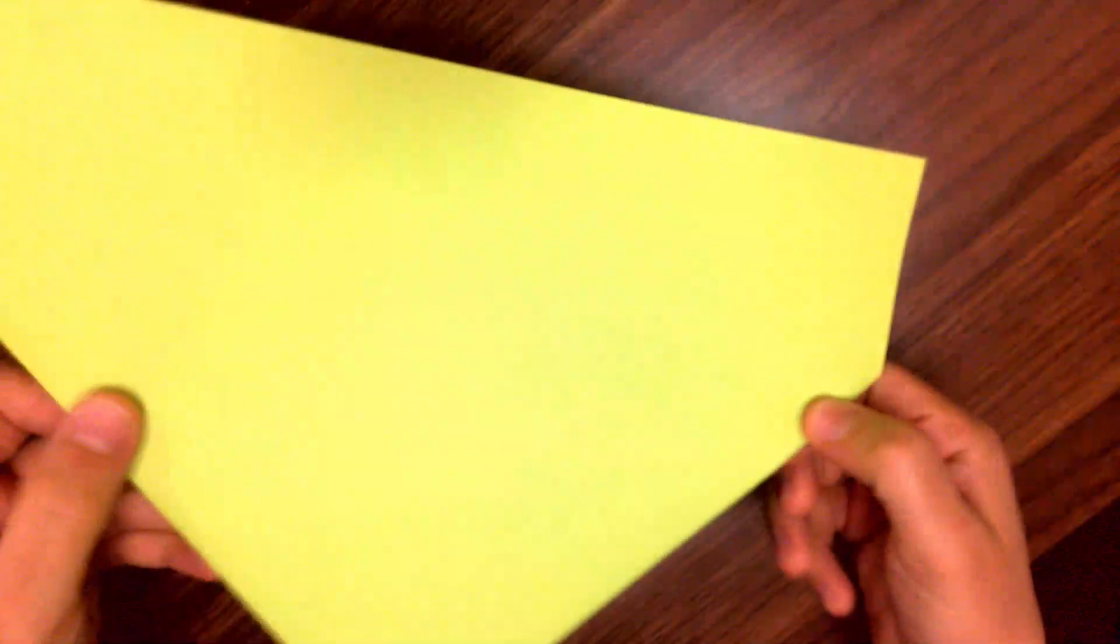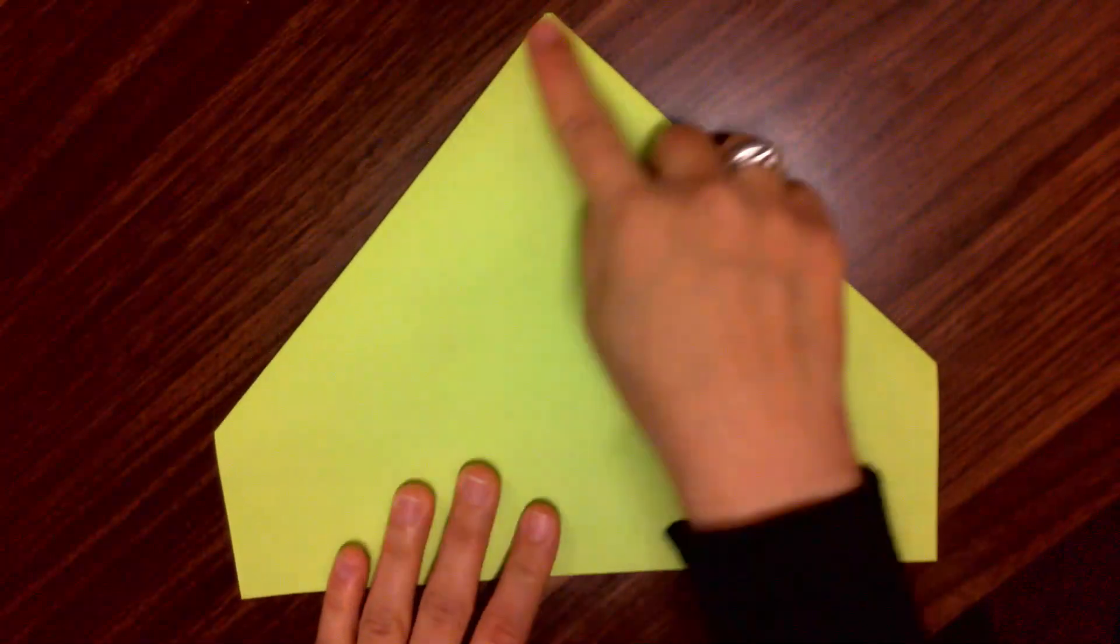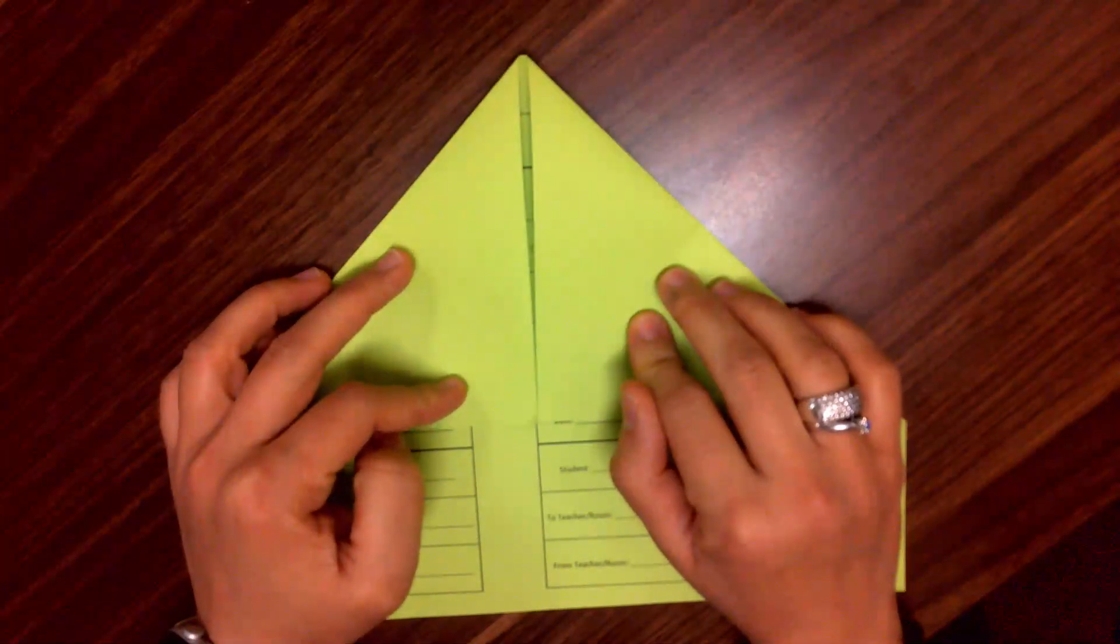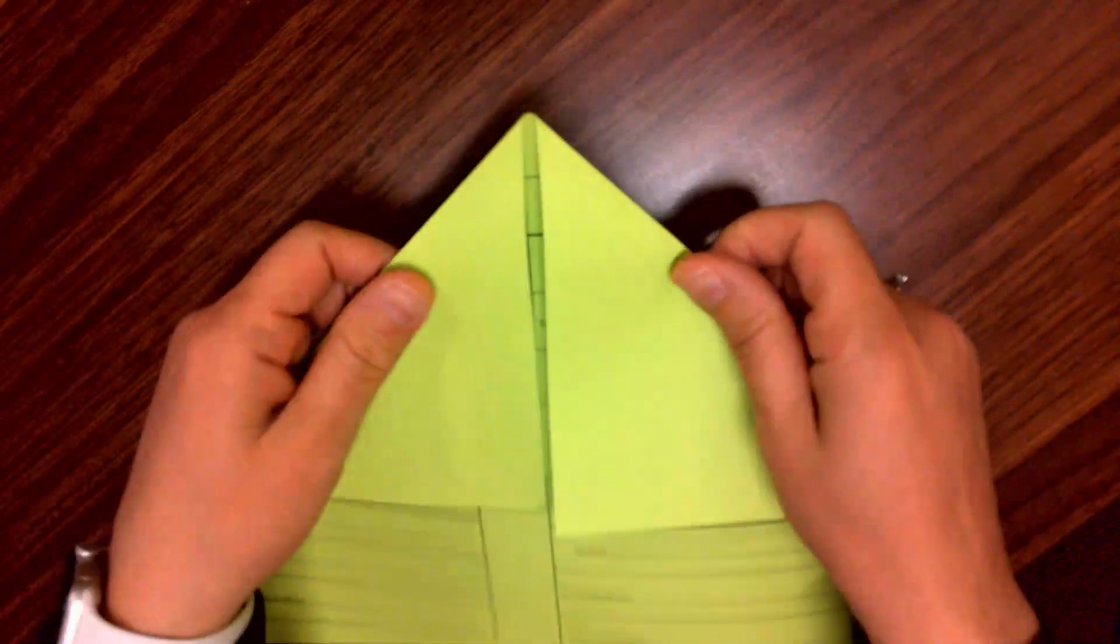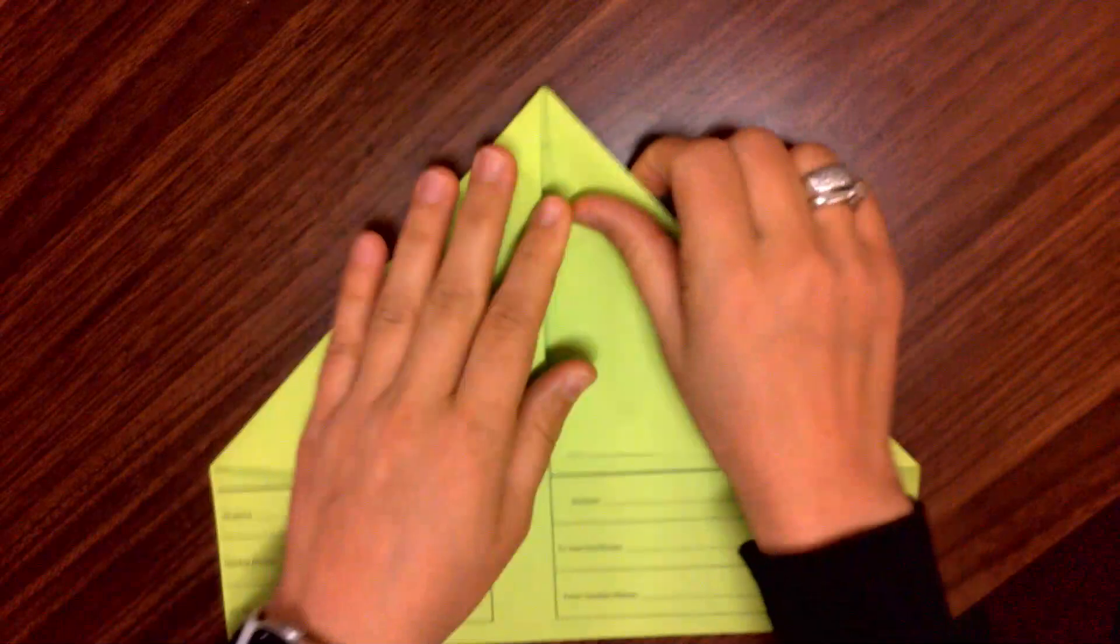So then I will push it. I will make sure that it's all good. So the back side looks like this, looks like a house shape. What will happen now, since we folded it inwards, now we're going to be folding backwards.